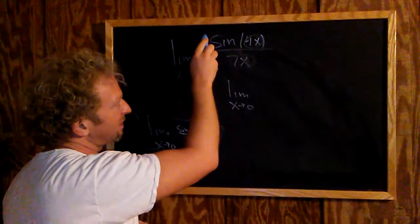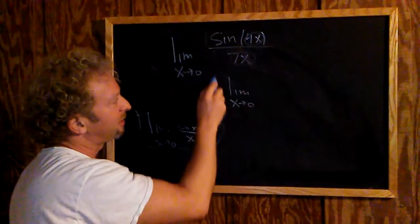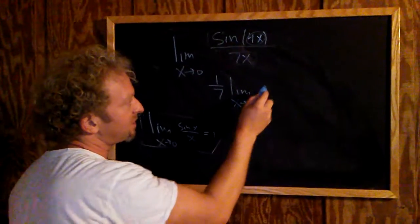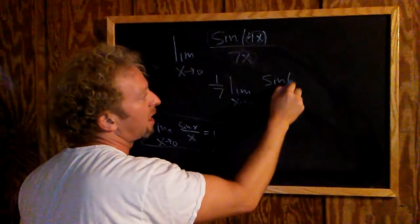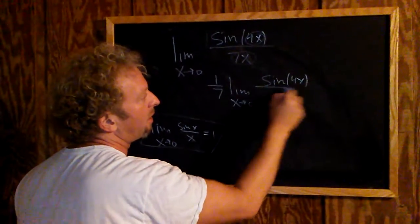We have a 7 here on the bottom, so you can think of this as 1 over 7. We'll pull it out, and that leaves us with sine 4x over x.